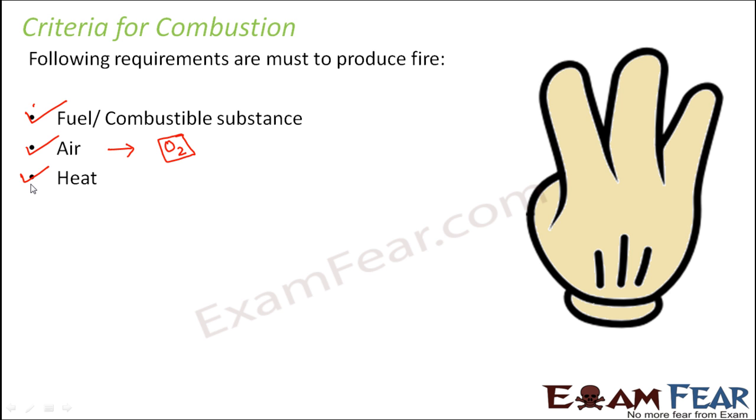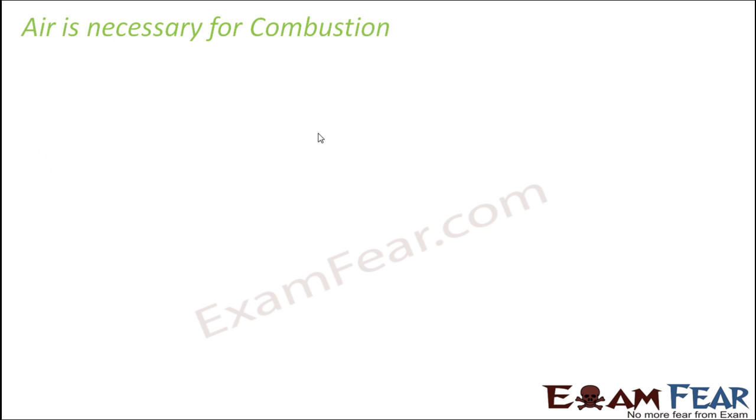The first point is combustible substance. We have already discussed that not all substances readily burn. Those substances which easily burn to produce a lot of heat and light are called combustible substances, and one such combustible substance has to be present for combustion to take place.